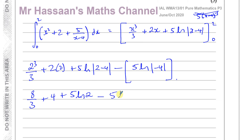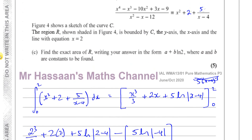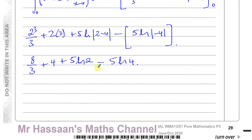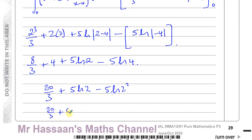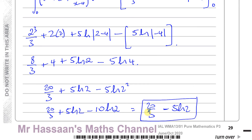And minus 5 times ln 4 — because the magnitude of minus 4 is 4. We want to express this in terms of ln 2. So 8 over 3 plus 4 is 8 over 3 plus 12 over 3, which is 20 over 3. I have 5 ln 2, and minus 5 times ln 2 squared — using the power law that's minus 10 ln 2. So I end up with 20 over 3 minus 5 ln 2.